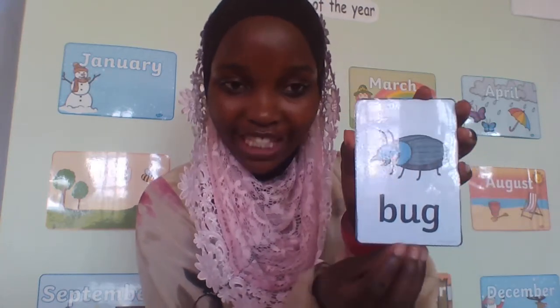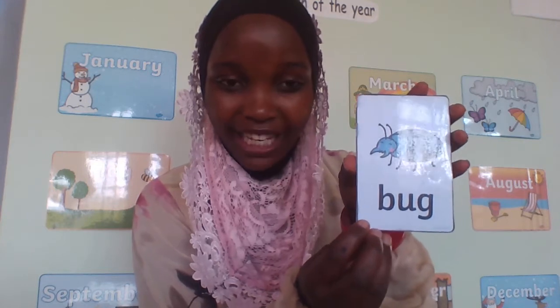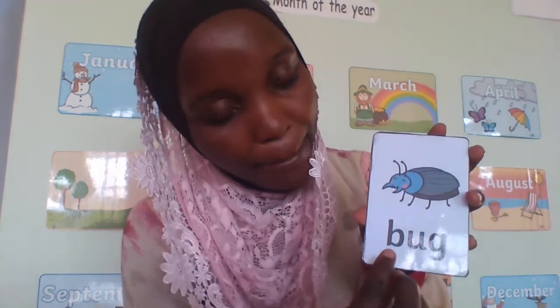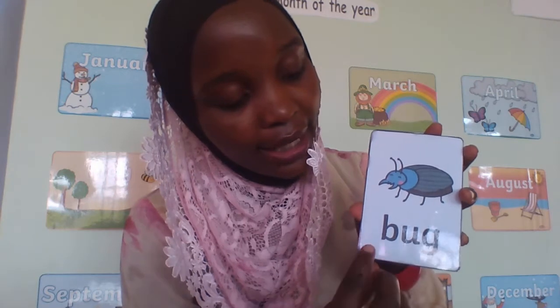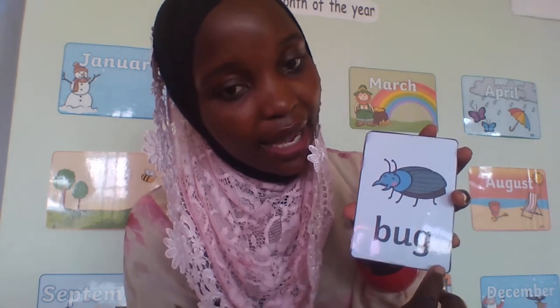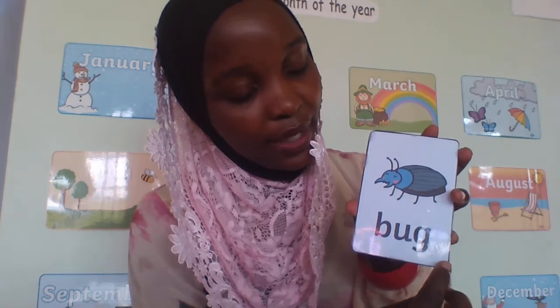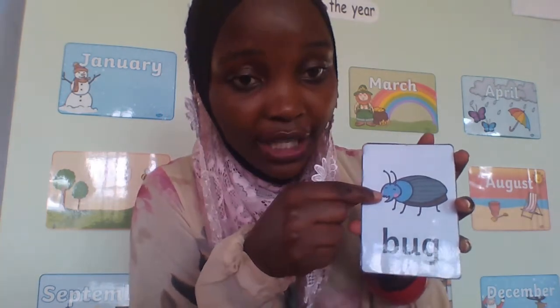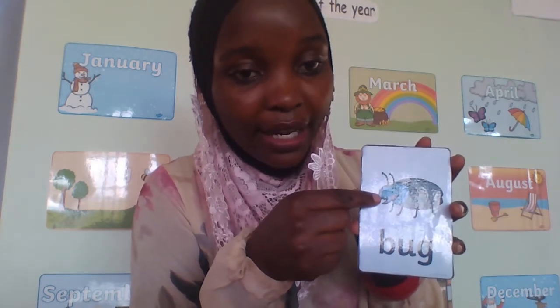What is this, children? Can we spell it? B-U-G, the word is 'bug'. Again — 'bug'. This one is a picture of a bug.